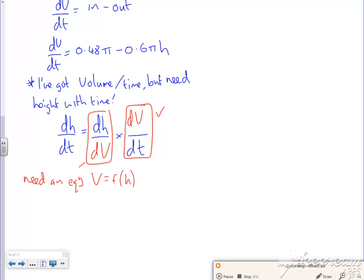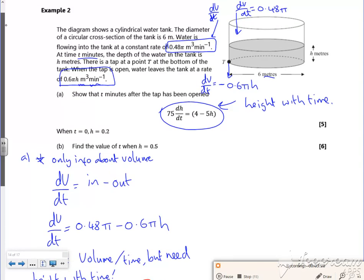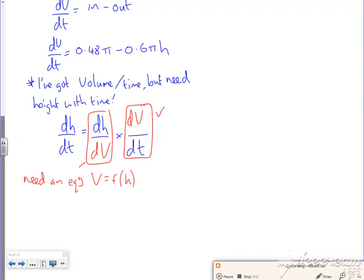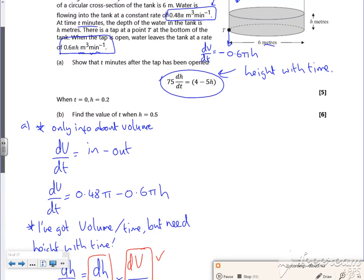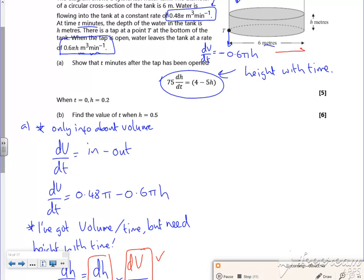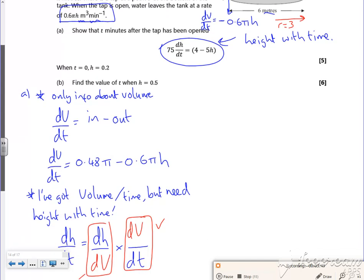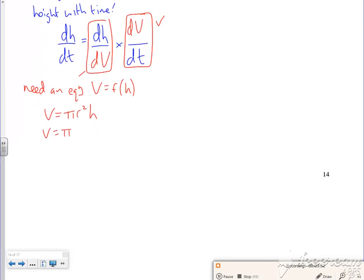But I need something that links volume of a cylinder with height. So I need an equation as V as a function of height, and luckily I kind of know that, don't I? Because my volume would be pi r squared h. So I know that my volume is pi r squared h, where the diameter is 6, so my radius is 3. So my volume is pi times 3 squared h. So, hang on, I don't want to differentiate it just yet. I'll carry away with myself. So V is 9 pi h.